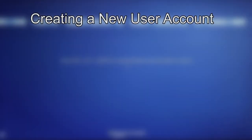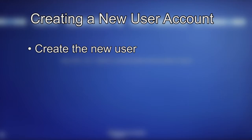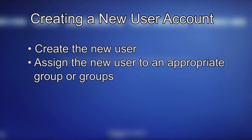Creating a new user account. As mentioned previously, user security is managed by Windows, so creating a user account in Windows gives access to the Windows operating system and the Vitek 2 system software. In order to create a new user account: first, create the new user, and second, assign the new user to an appropriate group or groups. Assigning a new user to a group or groups determines the privileges or functions that user can perform.